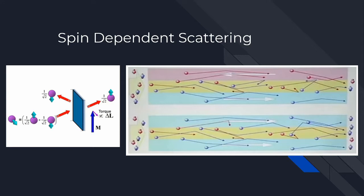This experiment leads us to a basic understanding of spin-dependent scattering, where electrons traveling through a magnetic medium experience a high or low resistance depending on the direction of magnetization. Electrons of the same magnetic moment can pass easily through the magnetic boundary. When the ferromagnetic layers are magnetized in opposite directions, the electrons are strongly scattered, resulting in an extremely low current. When the layers are magnetized in the same direction, far less electrons are scattered, resulting in a far greater current flow and far lower resistance.